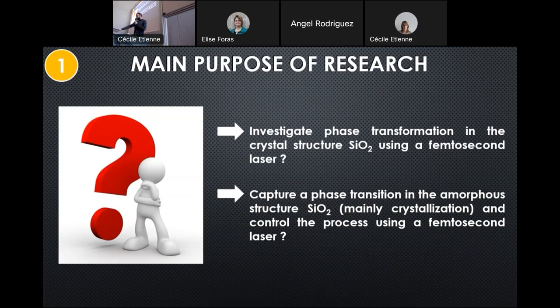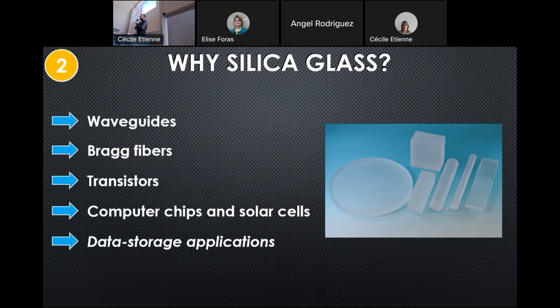We have chosen silica glass because there is a variety of applications all over the world like waveguides, optical fibers, transistors, computer chips, and solar cells. In almost all of these applications it is used because of its semiconducting nature.